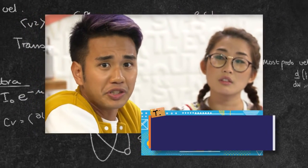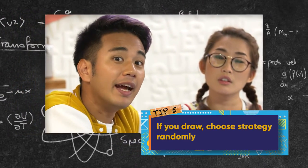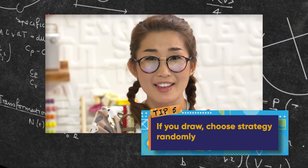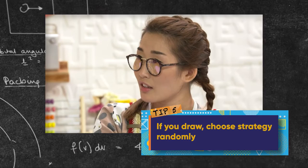What happens if it's a draw? Well, we move on to tip five: choose your strategy randomly and try again. How is this math? Well, it's all part of game theory — the math of making decisions and strategies.